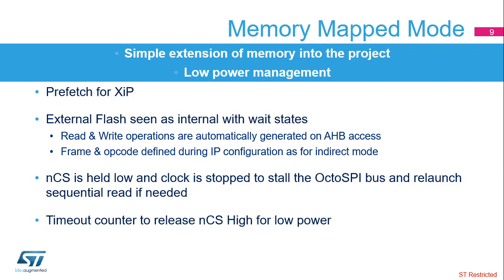The OctoSPI also provides a memory mapped mode. The main application benefit introduced by this mode is the simple integration of an external memory extension with no difference between read or write accesses of internal or externally connected memory, except the number of wait states. This mode is suitable for both read and write operations and external memories. Whether it be RAM or flash, they are seen as internal memory with wait states included to compensate for lower speed of external memory. The maximum size supported by this mode is limited to 256 MB per instance. A prefetch buffer supports local execution; therefore, the code could be executed directly from the external memory without the need to download it into the internal RAM.